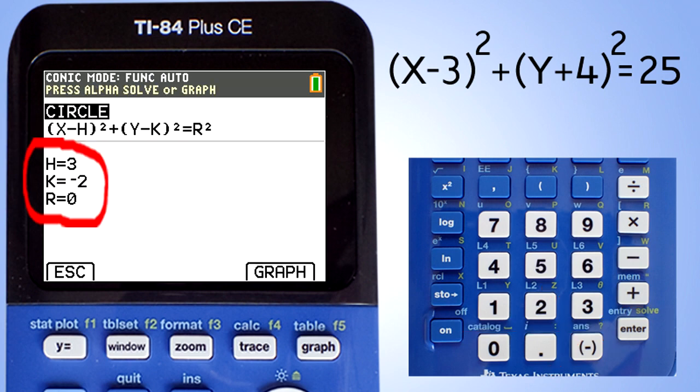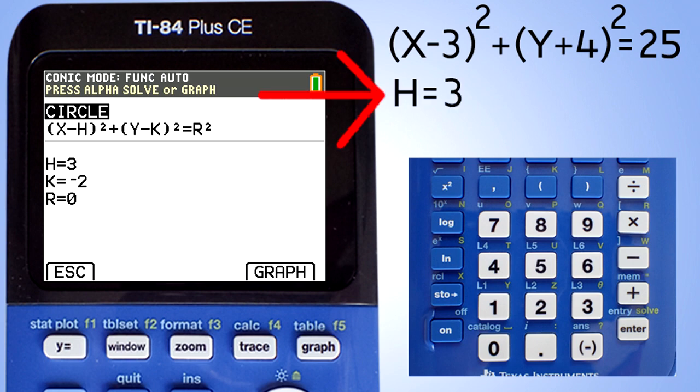To graph the circle we will need to know H, K, and R. The numbers below are from the previous circle equation that I was graphing. Using our equation, H equals 3, K equals negative 4, and R² equals 25.